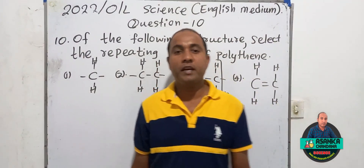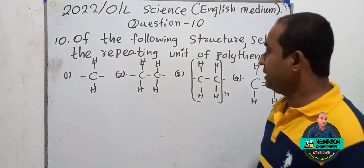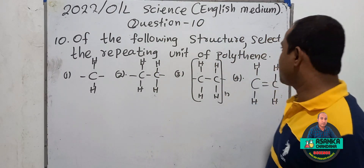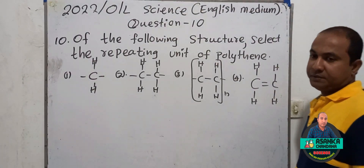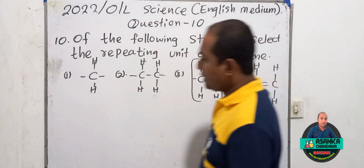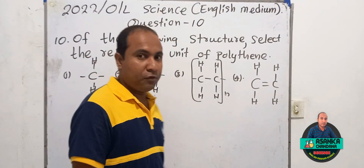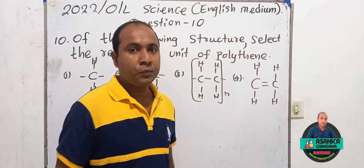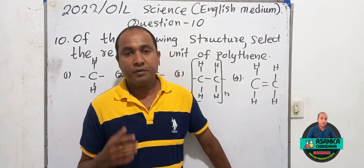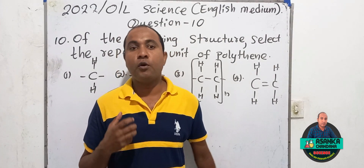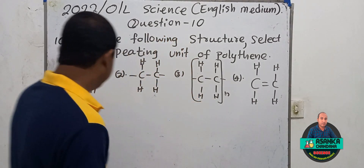We will go to question number 10. The question is: from the following structure, select the repeating unit of polythene. Now, polythene is a hydrocarbon — it is made by the polymerization of ethene molecules. What are the ethene molecules?